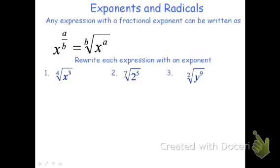We're going to write each expression with an exponent — take each of these that have a radical and write them in exponential form. If it's the 4th root, that's going to become the bottom of the fraction of the exponent. We're taking x and raising it to the 3rd power, so 3 will become the top. So when I rewrite this, it will become x to the 3 over 4, or x to the 3 fourths.